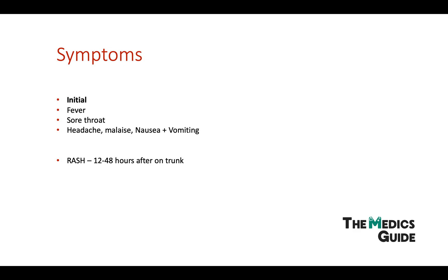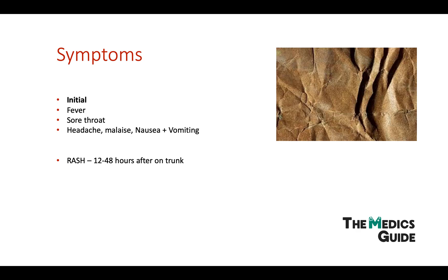The rash spreads to the rest of the body, but it's important to know that it avoids the face. Characteristically it's got a sandpaper-like texture, and that's really important to know — some people say it's more important than the way the rash looks. It's also more prominent on the folds of the skin: the neck, axilla, groin, elbow, and knees. It's also associated with something called Pastia's lines — these are straight deep red lines that you can see on the skin.